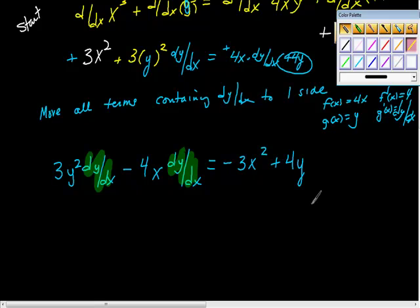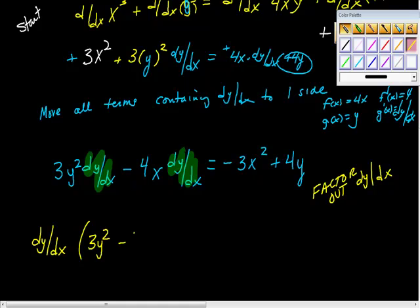So I'm going to factor it out. So factor out dy/dx. So here's my dy/dx, dy/dx times 3y² - 4x.